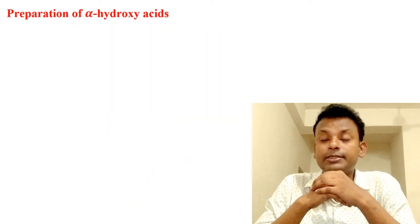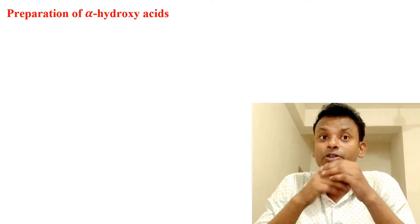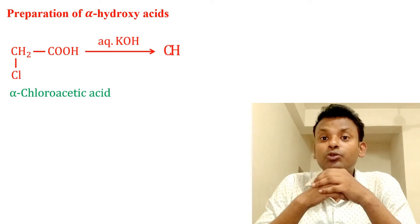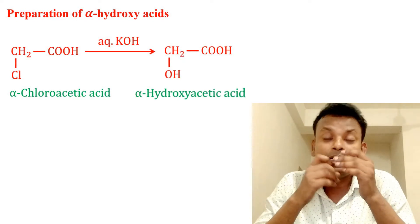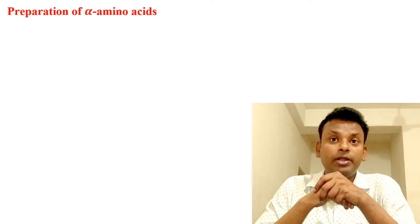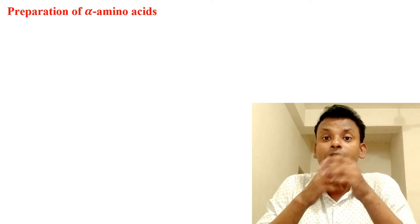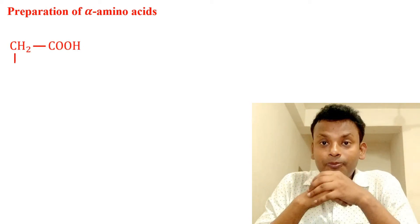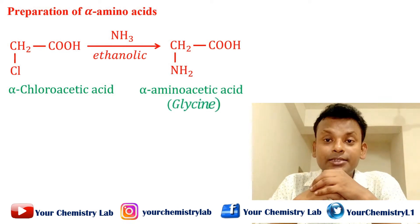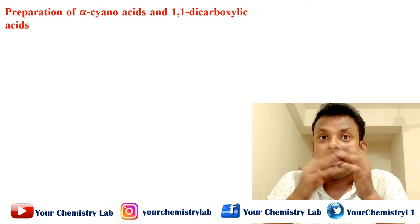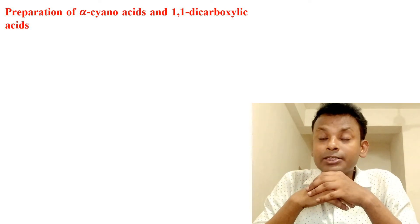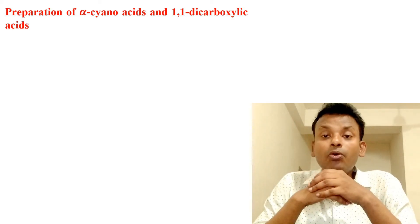Preparation of alpha hydroxy acid and preparation of alpha amino acid: Alpha amino acids are obtained when alpha halo acids are treated with alcoholic or ethanolic ammonia. Alpha chloroacetic acid reacts with ammonia in the presence of alcohol to give alpha amino acetic acid, that is glycine. Preparation of alpha cyano acid and 1,1-dicarboxylic acid: Alpha halo acid reacts with alcoholic KCN to give alpha cyano acid, which on hydrolysis gives 1,1-dicarboxylic acid.